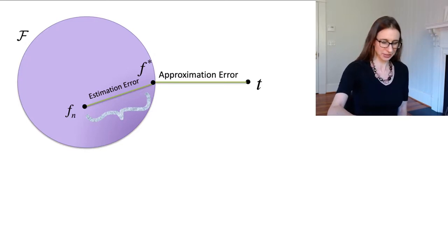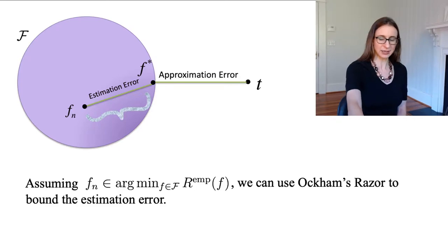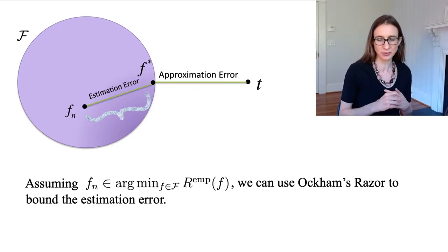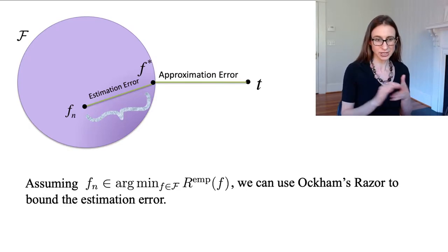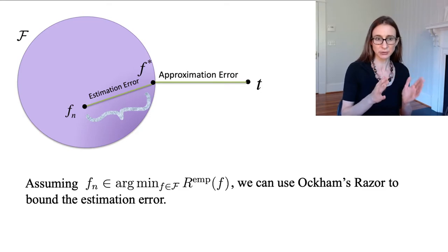Okay, so I just want to put the figure back up here, and for right now I want to assume that I've chosen Fn as the minimizer of the empirical risk, so no regularization, and my algorithm is simply to choose Fn to minimize empirical risk within the class.